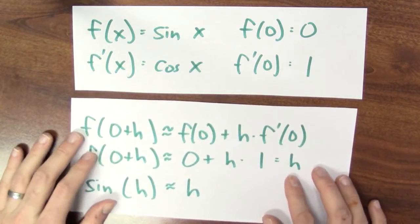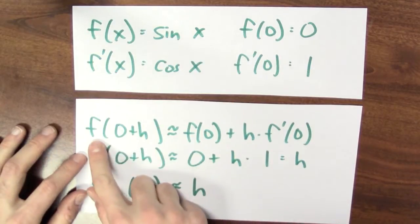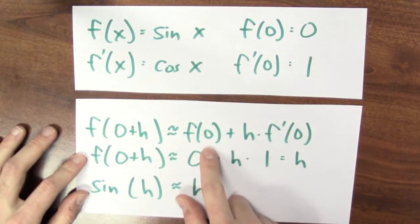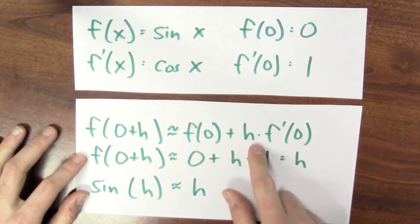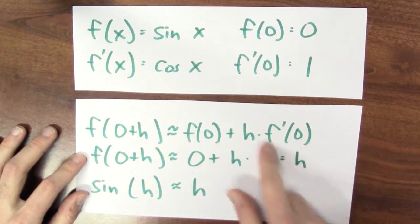I can use the derivative to approximate the function's value. The function's value near 0 is the function's value at 0 plus how much I wiggled the input by times the ratio of output change to input change, the derivative at 0.